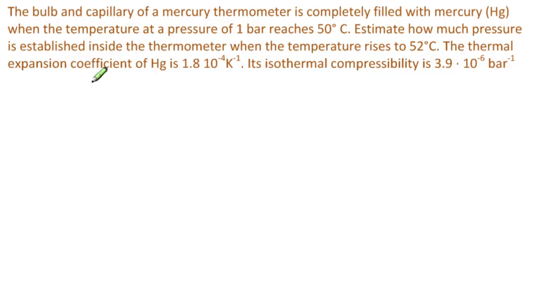The thermal expansion coefficient of mercury is 1.8 times 10 to the minus 4, 1 over Kelvin, and its isothermal compressibility is 3.9 times 10 to the minus 6, 1 over bar.